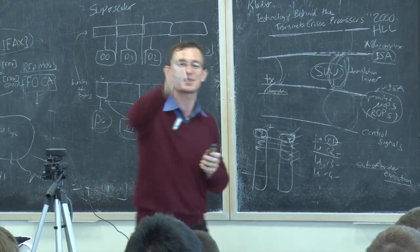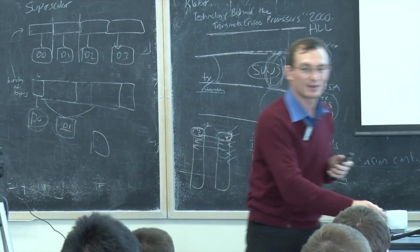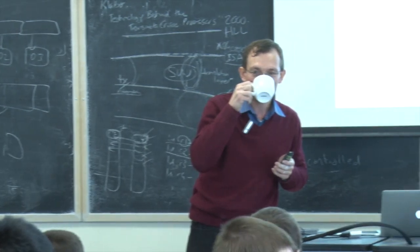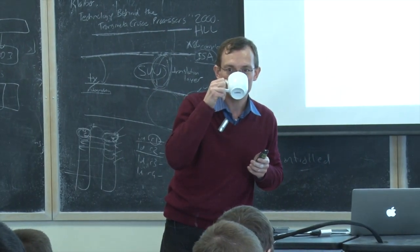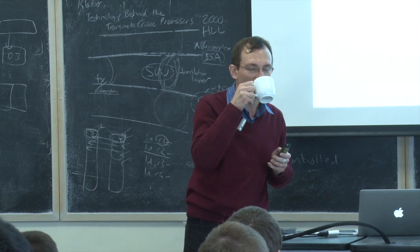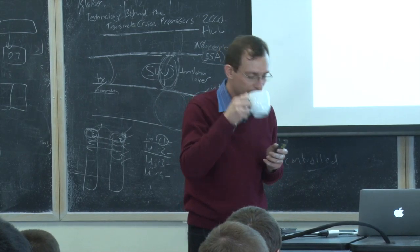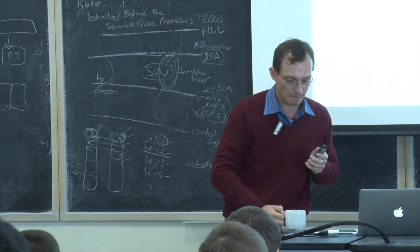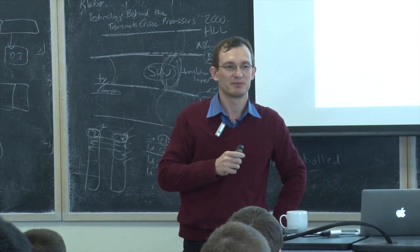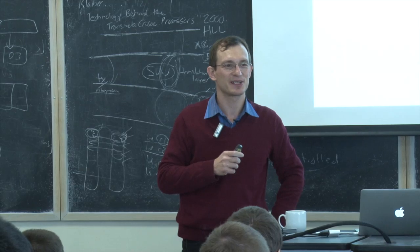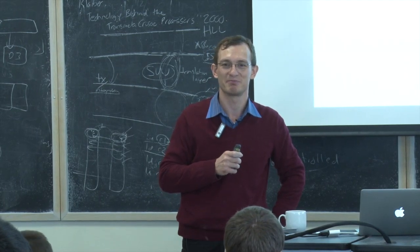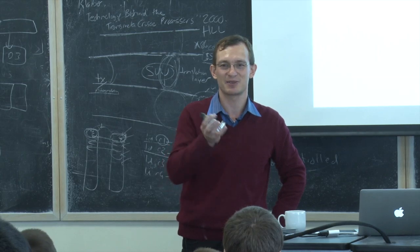In a variable length ISA, uniform decode can still be a property of instructions of the same length. If you have instructions of different lengths, it's very hard to think of uniform decode. Usually RISC philosophy consists of simple instructions, fixed length, uniform decode, and few addressing modes. Whereas CISC philosophy has complex instructions, variable length, non-uniform decode, and many addressing modes. This is probably the best definition to think of when distinguishing RISC versus CISC.